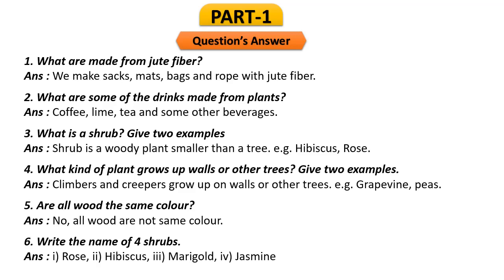Question 3: What is a shrub? Give two examples. A shrub is a woody plant smaller than a tree — examples are hibiscus and rose. Its stem is much weaker than that of a big tree, which is why it is called a shrub. Question 4: What kind of plant grows up walls and other trees? Give two examples. Climbers and creepers grow up walls and other trees — examples are grapevine and peas. They can climb through walls or through trees.